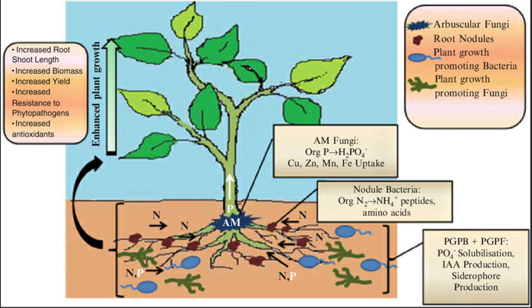4. Nutrient uptake: plants obtain essential nutrients like nitrogen, phosphorus, and potassium from the soil through their root systems. These nutrients are vital for healthy growth, and their availability in the soil can impact plant development significantly.